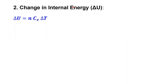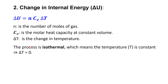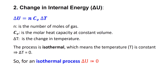Now let's calculate the change in internal energy, ΔU. For an ideal gas, the internal energy U depends only on temperature. The general formula is ΔU equals nCᵥΔT, where Cᵥ is the molar heat capacity at constant volume and ΔT is the change in temperature. However, in this problem the process is isothermal, which means temperature is constant, so ΔT is 0. Therefore, for an isothermal process, the change in internal energy is always 0, regardless of whether the process is reversible or irreversible, because the internal energy of an ideal gas depends only on temperature.